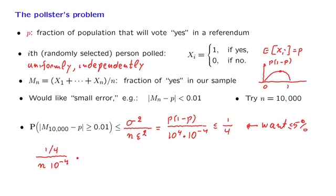We would like this quantity to be less than or equal to 5%, which is 5 over 10 to the second power. And after you solve this inequality, you find that this is equivalent to taking n larger than or equal to 10 to the sixth. And then the 5 together with that 4 give us a denominator of 20. And this number is equal to 50,000.